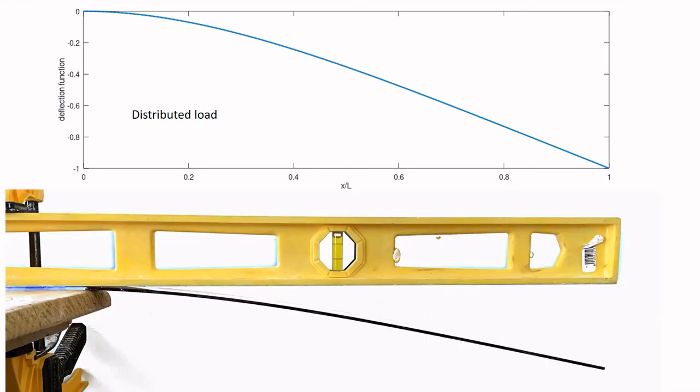Finally, I compare our predicted shape to a real experiment. On the bottom I have a thin polycarbonate beam that sags quite a bit under its own weight when hung off the edge of the table. I'm using a carpenter's level to guide the eye so we can see how the deflection grows from the clamped point out to the free end. The shape is pretty well captured by our prediction, and a careful quantitative comparison would show really good agreement between the theory and experiment.